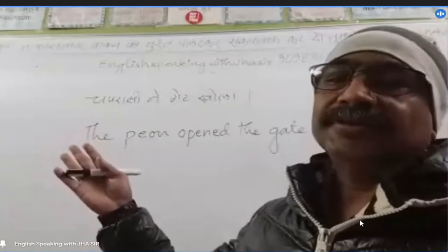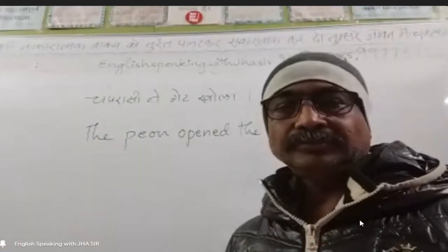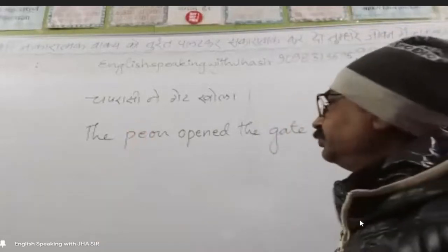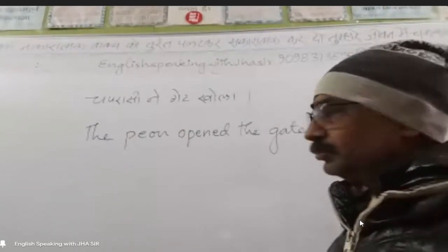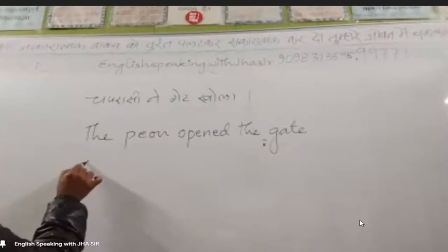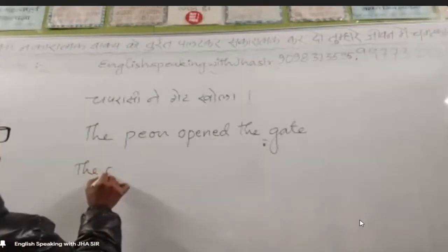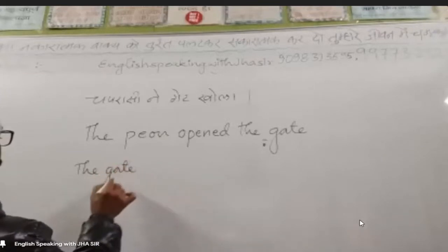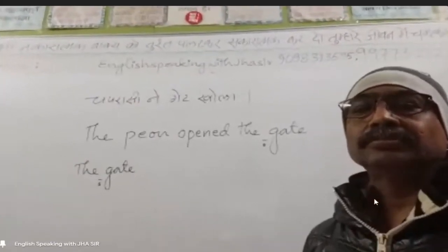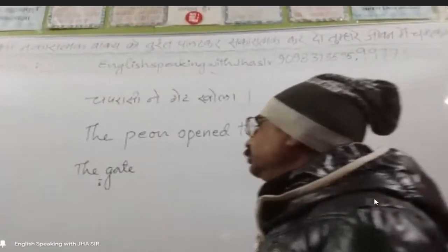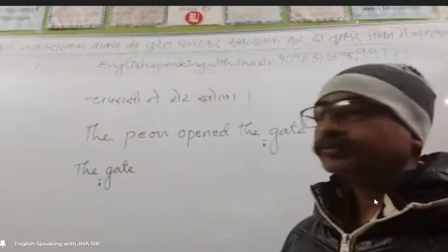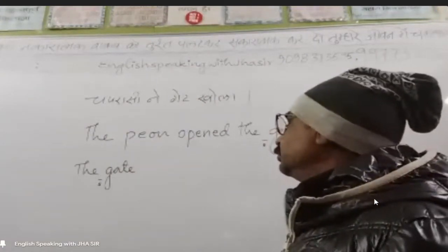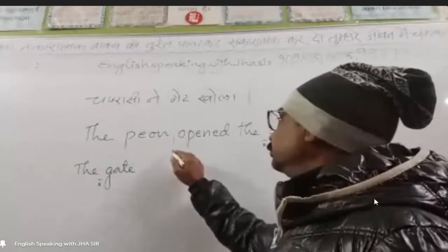Now the first related question: what is the first rule of passive voice? According to the first rule of passive voice, firstly we change the object into the subject. What is the object in this sentence? The gate is the object in that sentence. What is the second rule of passive voice? Thereafter, we take a helping verb accordingly. Is there any helping verb in this sentence? No, there is no helping verb in this sentence.